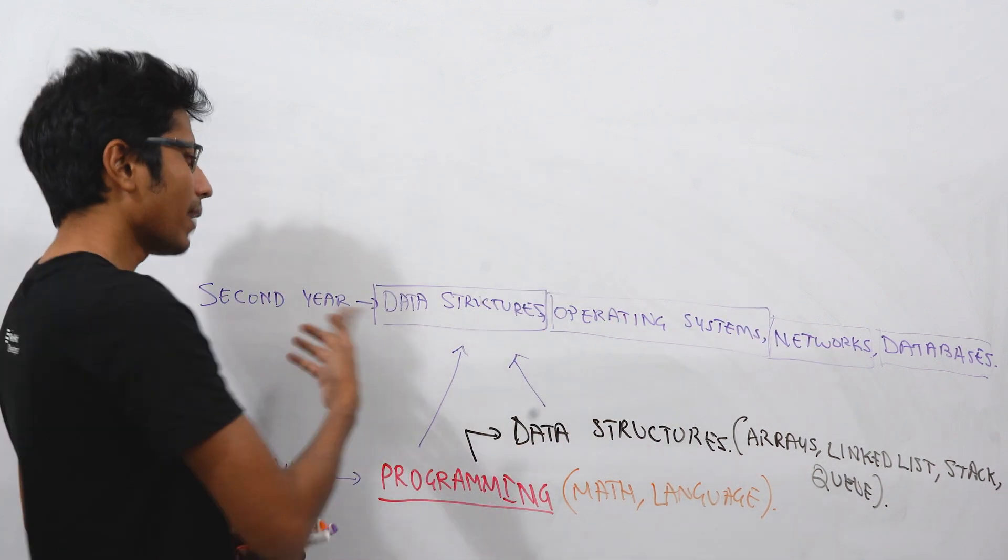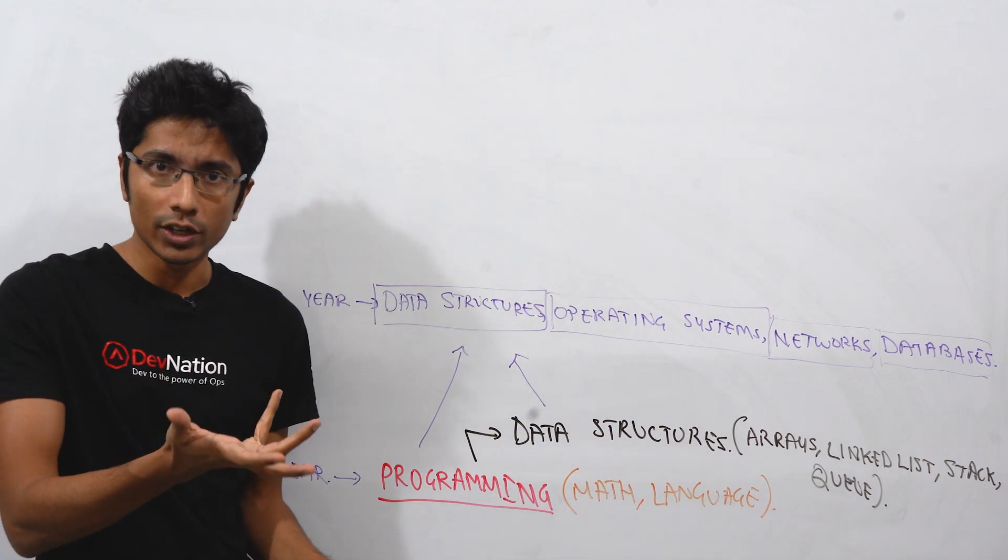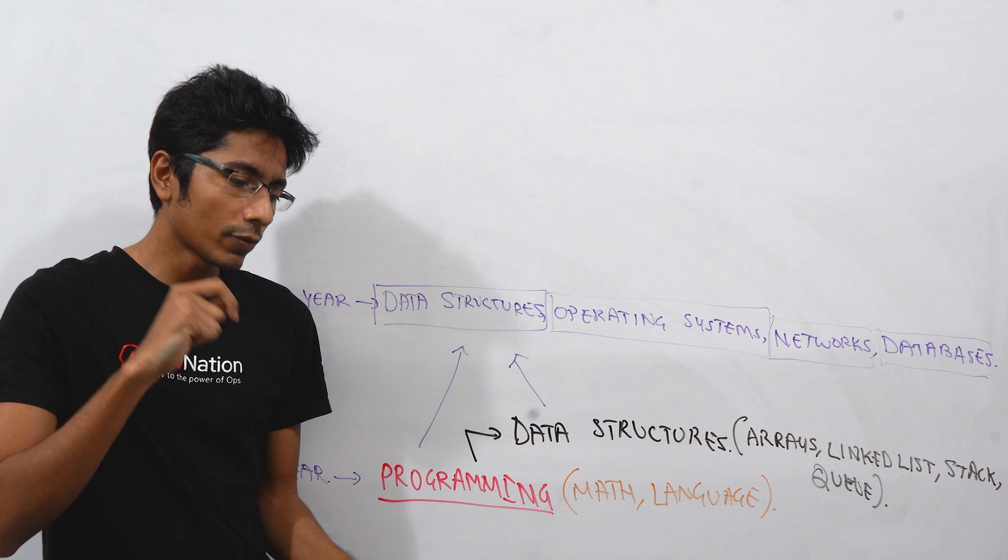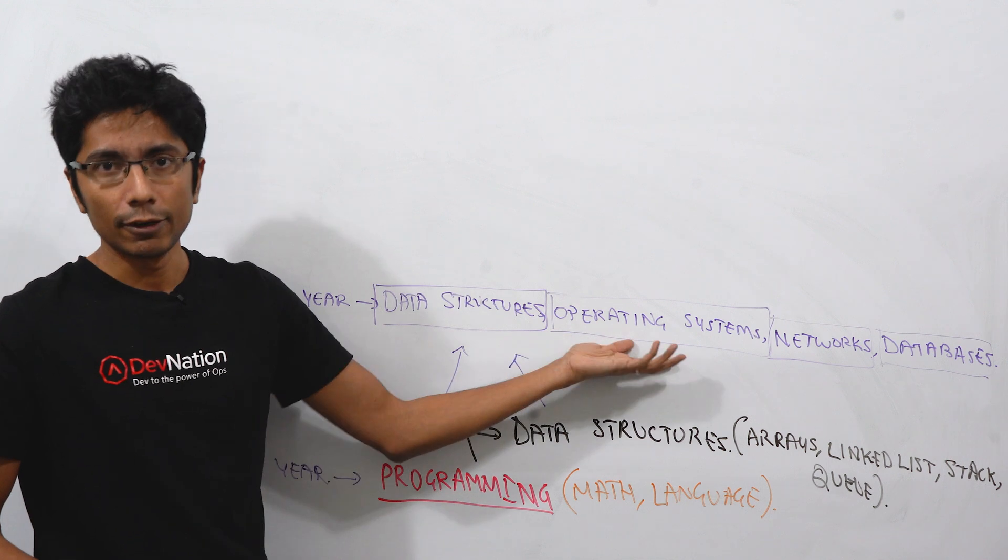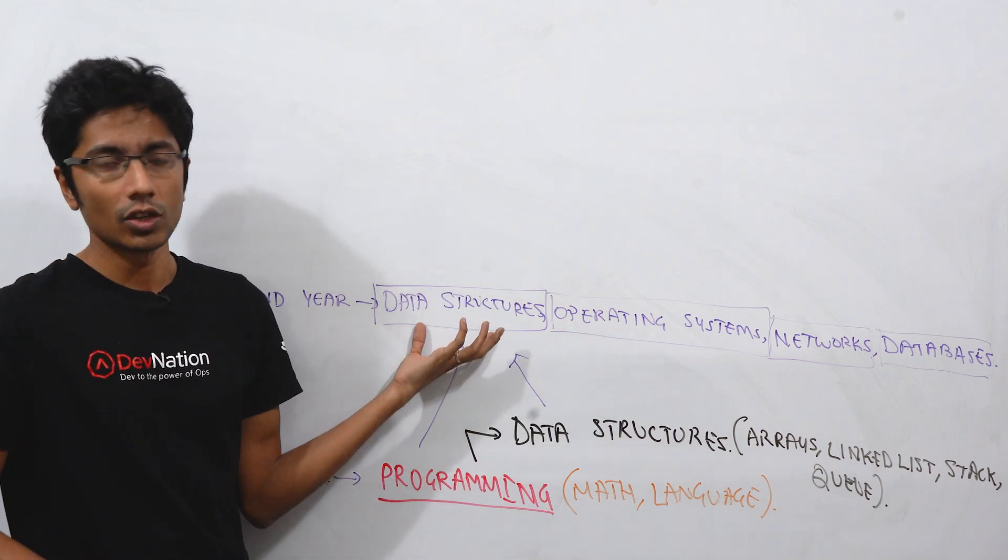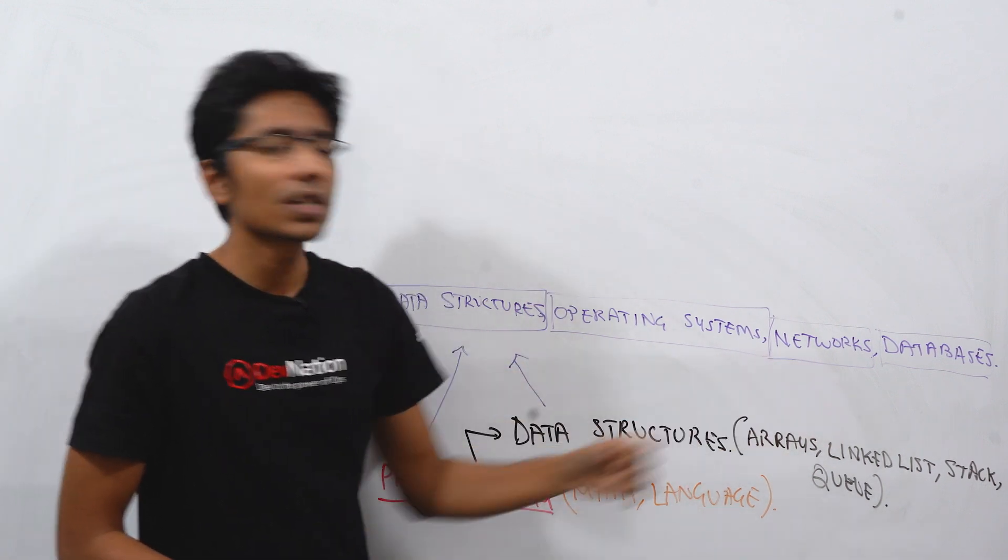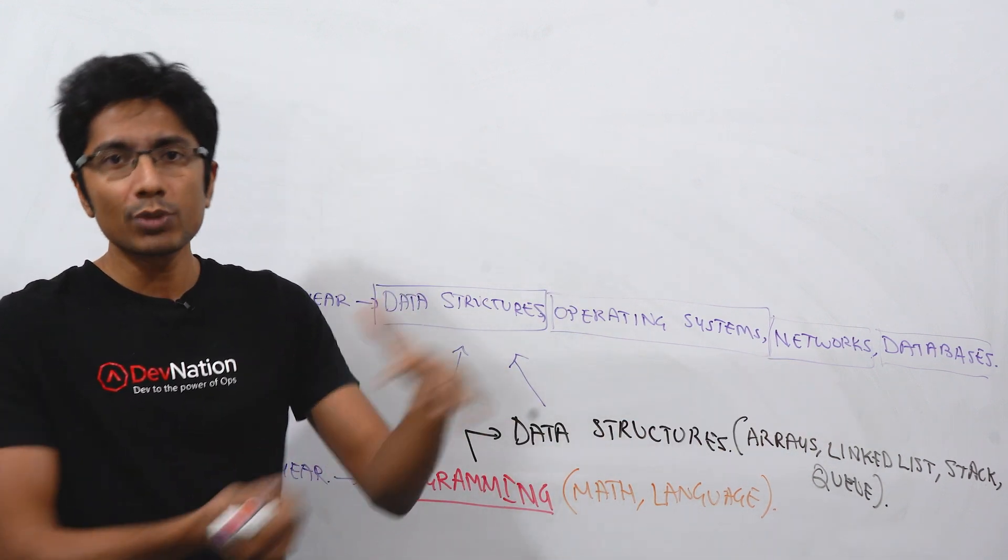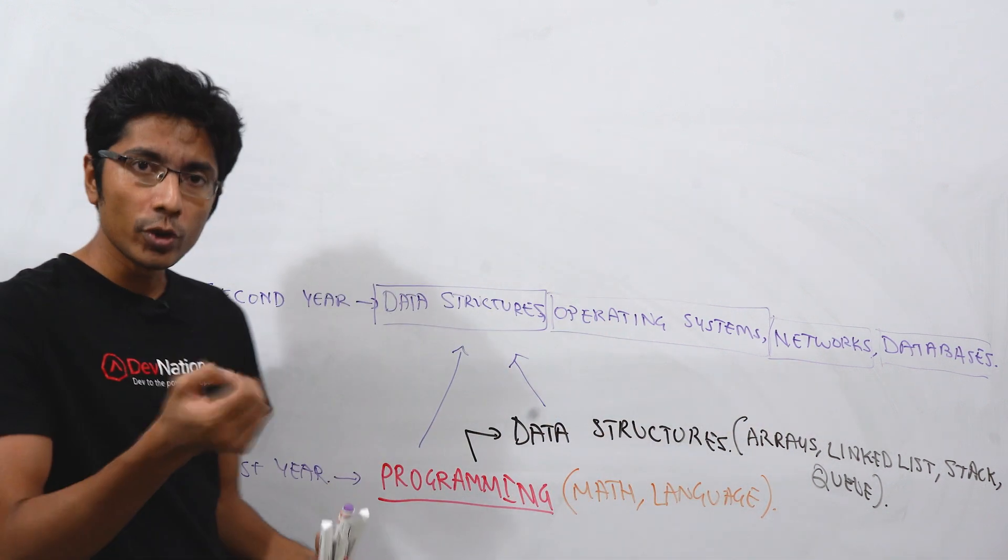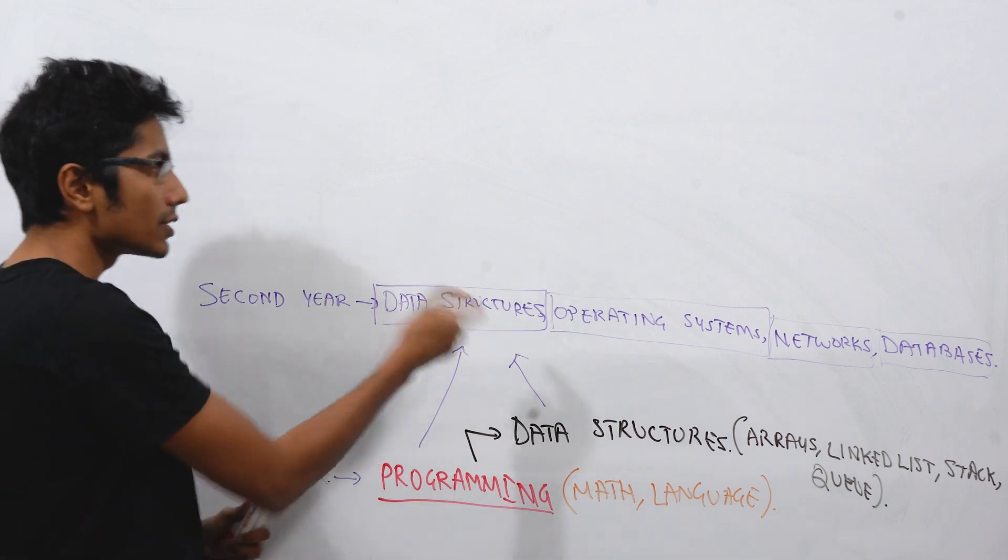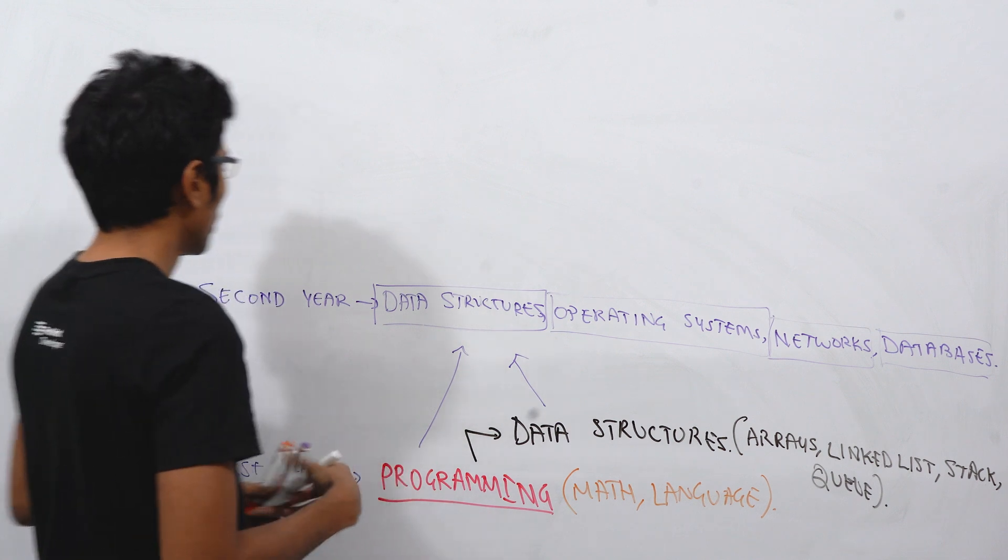And many of these subjects, like all four of these form the foundation for any kind of computer application that you have. So even in terms of soft computing, you'll see some concepts from this come up there. You'll probably have some data structures concepts over there. If you're looking at mobile computing, then networks sometimes seeps into that subject. So this is going to form the base of your computer science fundamentals. And you'll see that this becomes super important later on when you're actually going for placements.